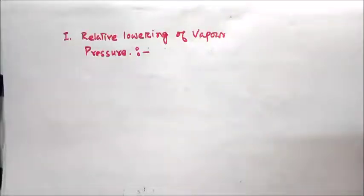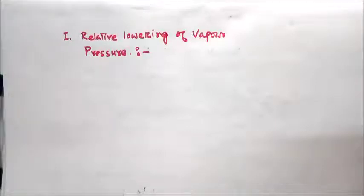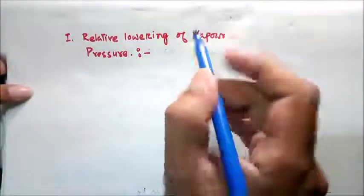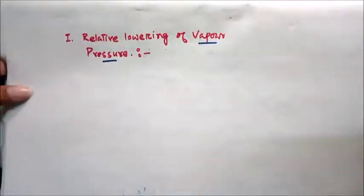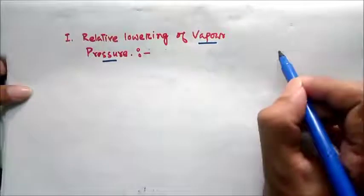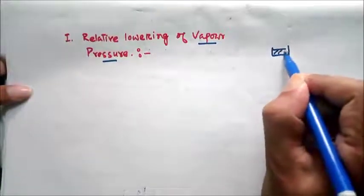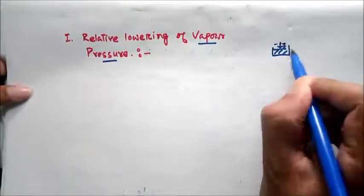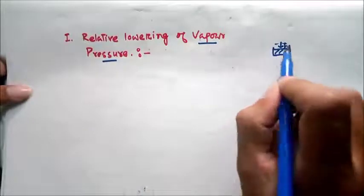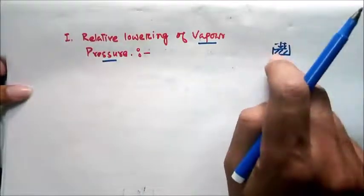First, let us consider the first colligative property — relative lowering of vapor pressure. Before that, you should know what vapor pressure is. Vapor pressure is generally the amount of pressure exerted by the vapor state on the surface of a solution in the equilibrium state.